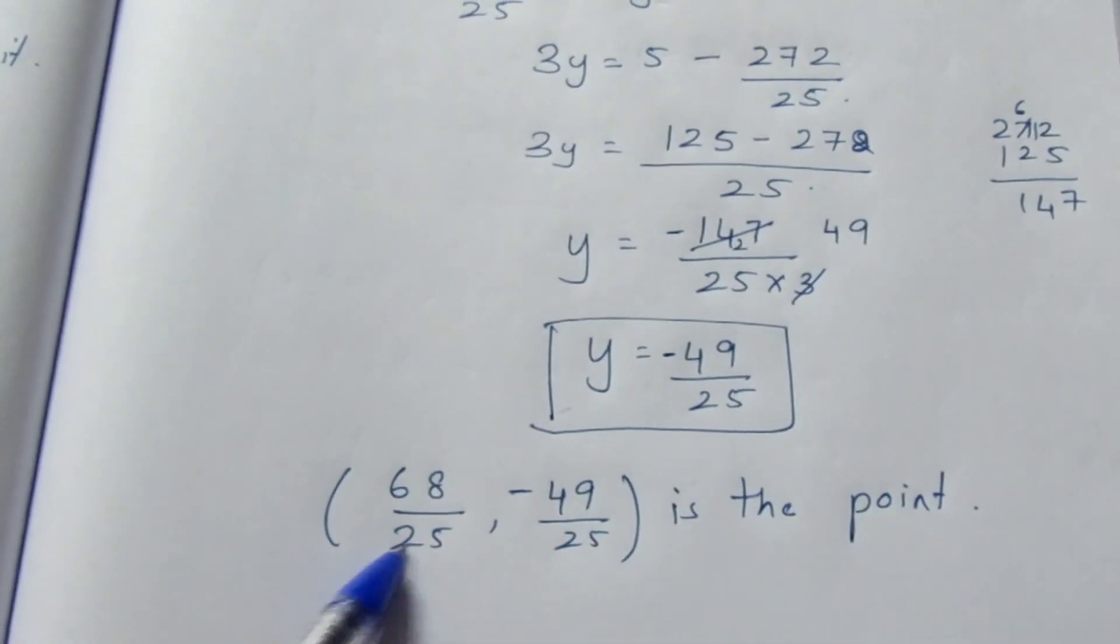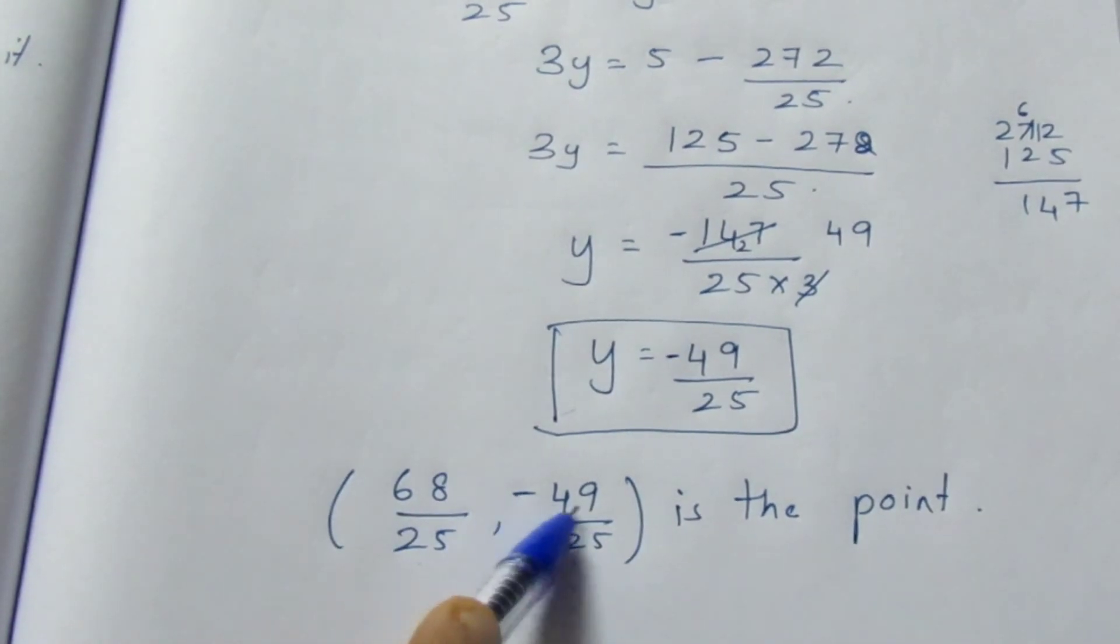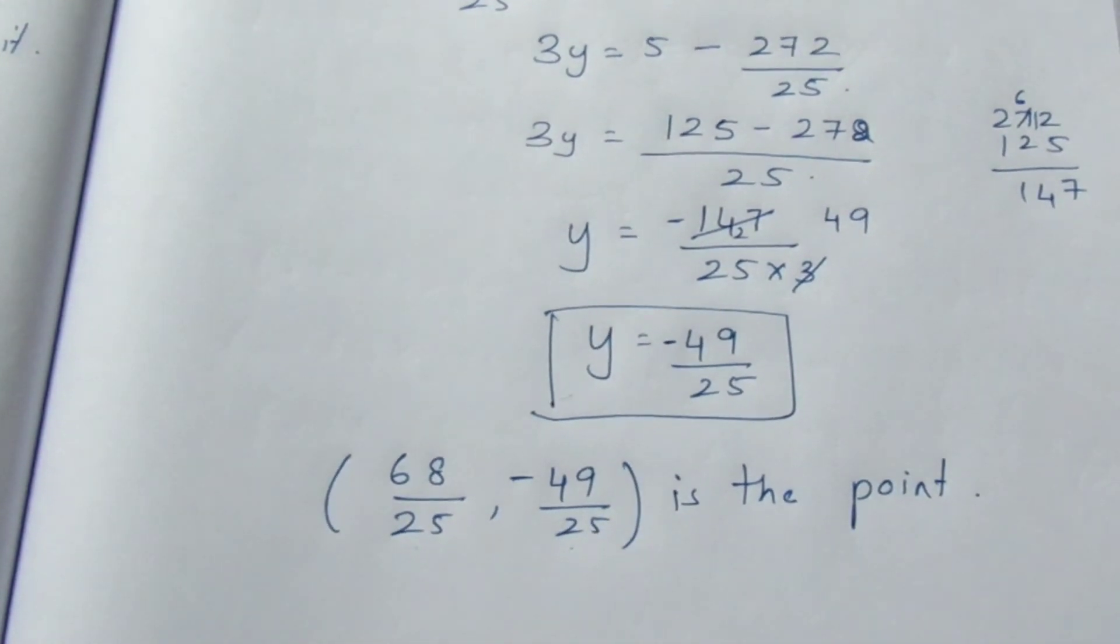While writing, we need to write the x term and the y term. So (68/25, -49/25) is the point of intersection between the two lines which is perpendicular. That's all with the sum. Thank you.